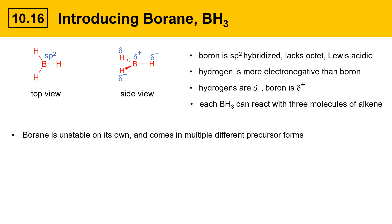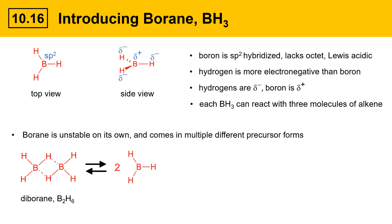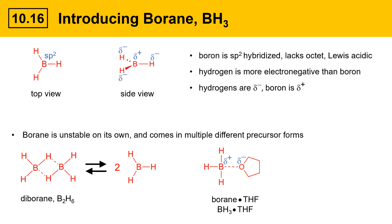Borane is unstable on its own and it comes in multiple different precursor forms. One of these forms is diborane, B2H6, which is two molecules of BH3 associated together in a dimer structure. This structure can dissociate to give two molecules of BH3. Another common form is borane-THF, or BH3-THF. THF stands for tetrahydrofuran, a cyclic ether that is a five-membered ring, and it bonds with boron to help stabilize it. The oxygen has a partial minus charge and the boron has a partial positive charge, with a strong non-covalent interaction represented by a dotted line. It can also dissociate to give BH3 and tetrahydrofuran.